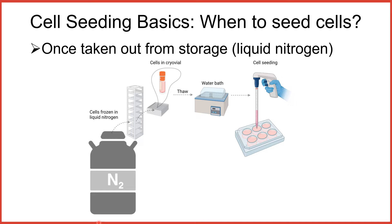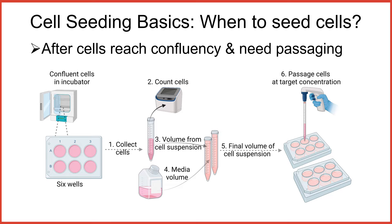The first instance is when we first take out frozen cells from liquid nitrogen. In this instance, the seeding doesn't need any calculation because typically the entire contents in the frozen vial is seeded after thawing. The second instance where seeding is done is when we need to passage the cells, which is typically because they have become confluent — that is, overcrowded.